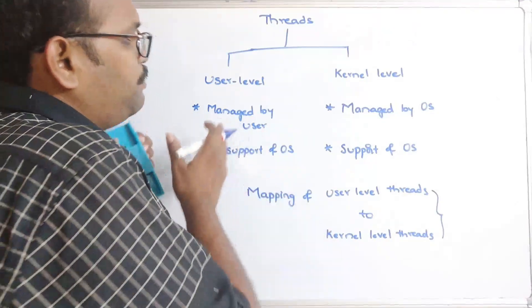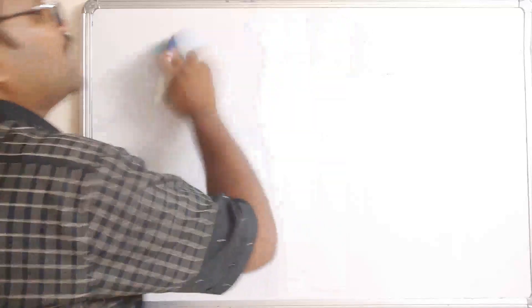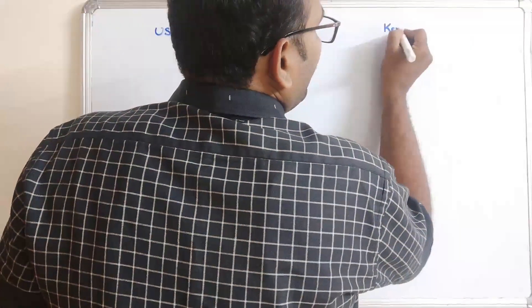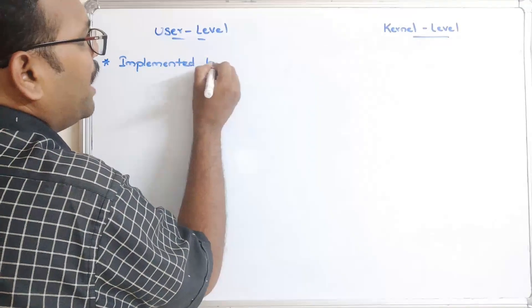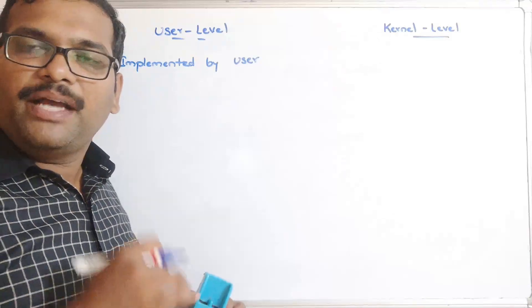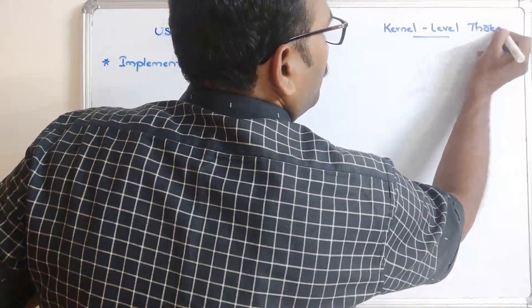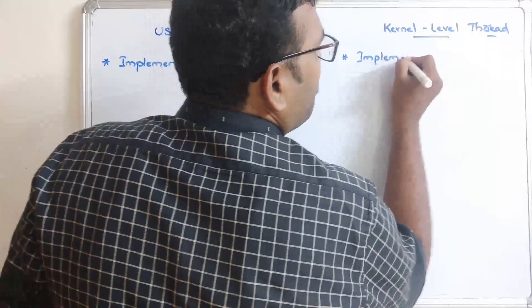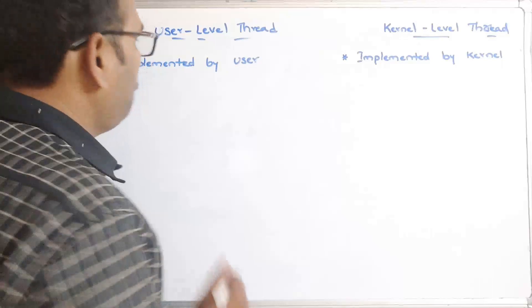Now we'll see the exact differences between user-level threads and kernel-level threads. Let's divide into two parts — one is user-level and the other is kernel-level. The first difference: user-level threads are implemented by the user — the name itself indicates this. Kernel-level threads are implemented by the kernel, which is the heart of the operating system.